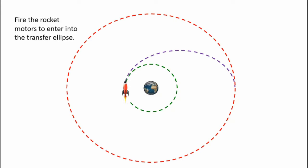Once again I fire my rocket motors to enter into the transfer ellipse. I only burn my rocket motors for a short period of time and again coast until apogee.